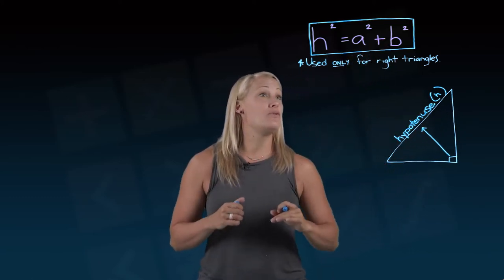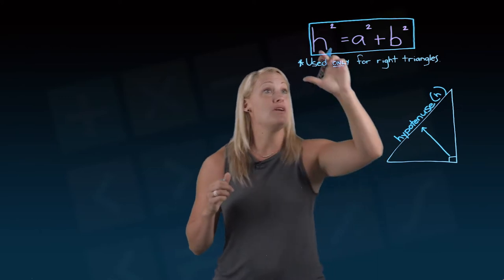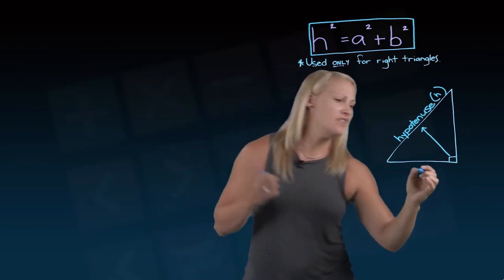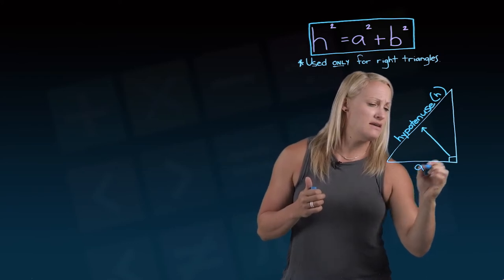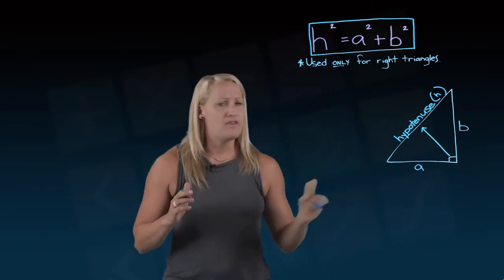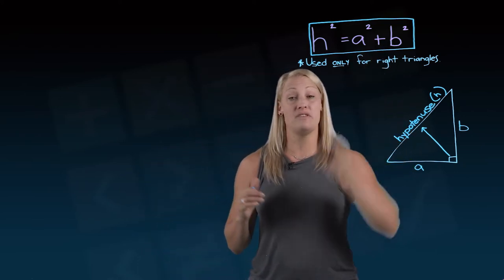So when we're looking back at the formula, the important thing to remember is that the h is on one side by itself. And the other two sides, we can call them a and b. And it doesn't matter if this side is a and that is b, or vice versa. They're kind of interchangeable, but the hypotenuse is important. It's got to be sitting by itself.